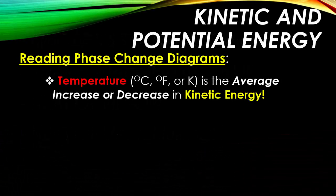Kinetic and potential energy can be read on a phase change diagram. The temperature, which is always the y-axis in Celsius, Fahrenheit, or Kelvin, is the average increase or decrease in kinetic energy. So if you're going from 0 to 100 degrees Celsius, that's an increase in kinetic energy. But the inverse, 100 to 0 degrees Celsius, will be a decrease in kinetic energy.